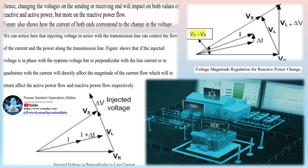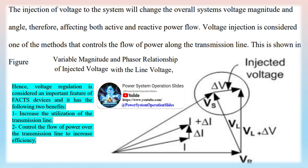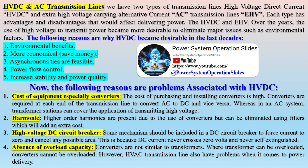In general, there are several advantages of using FACTS devices, which can be summarized as follows: better utilization of existing transmission system assets and reduced need for construction of new transmission lines; increased system reliability and availability by controlling reactive and real power flow independently; increased dynamic and transient grid stability.